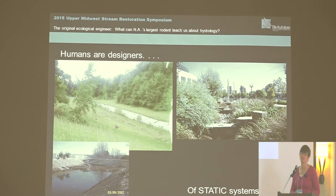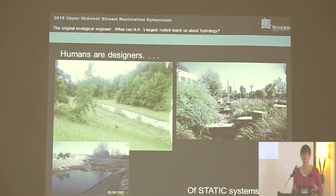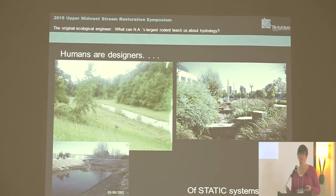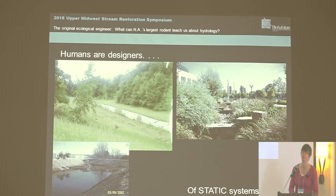As we developed Western civilization, we became more interested in building something to stay in one spot, and this translated into how we deal with our rivers and streams. In the past 20-30 years, we've learned as a profession that stream systems are dynamic. However, the general public and many clients don't always come to realize that when looking at their restoration projects — they expect that if they're paying for something, they want it to stay there. It's a learning process, and as professionals we should educate our clients and the public about the benefits of working with a dynamic system.